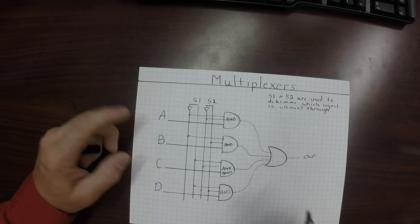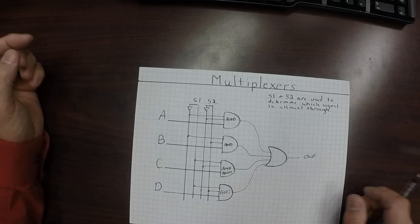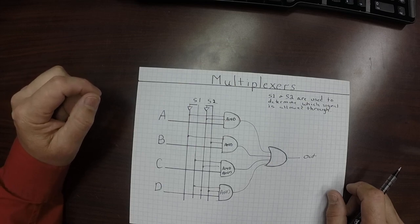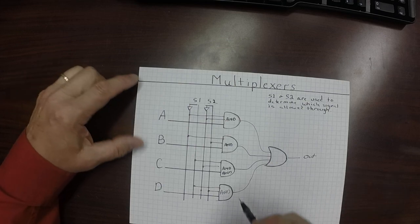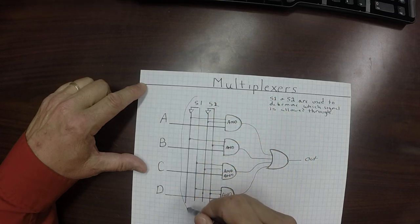So that's how multiplexers work. This is a 4-1 multiplexer. You can have 4-1, 8-1, 16-1, 32-1, any size you want. But you can see that the decoder is contained right in here. This is the decoder right here.